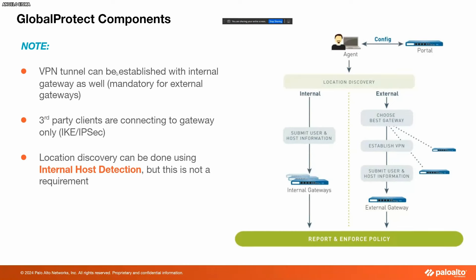The VPN tunnel can be established with an internal gateway as well. By default, you don't have to use a VPN tunnel for an internal gateway, but then the traffic is not going to be encrypted — though since the traffic is going through your internal network anyway, that's not a major concern. We can also use third-party clients connecting to the gateway via IPsec. Location discovery can be done using internal host detection, and if you want to use internal gateways, you will need to enable internal host detection so the GP agent can determine if it's in an internal or external network.